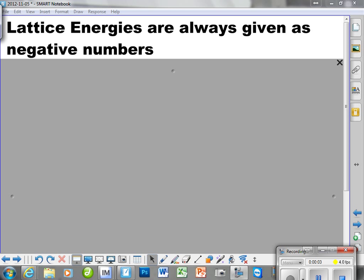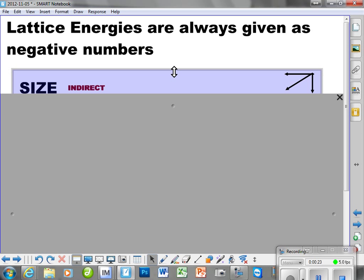Lattice energies are always given as negative numbers. We're going to be looking at what determines the level of lattice energy or the amount of lattice energy that any particular ionic compound has.